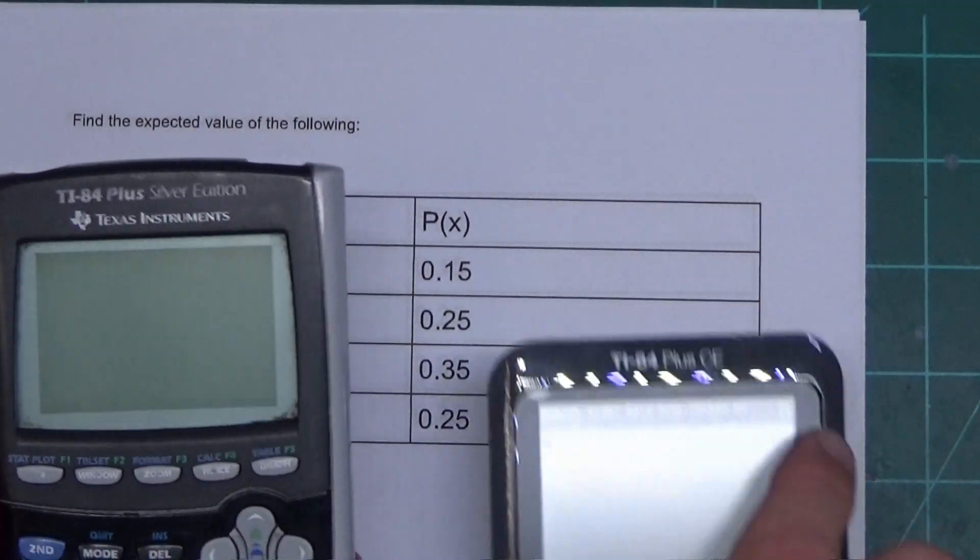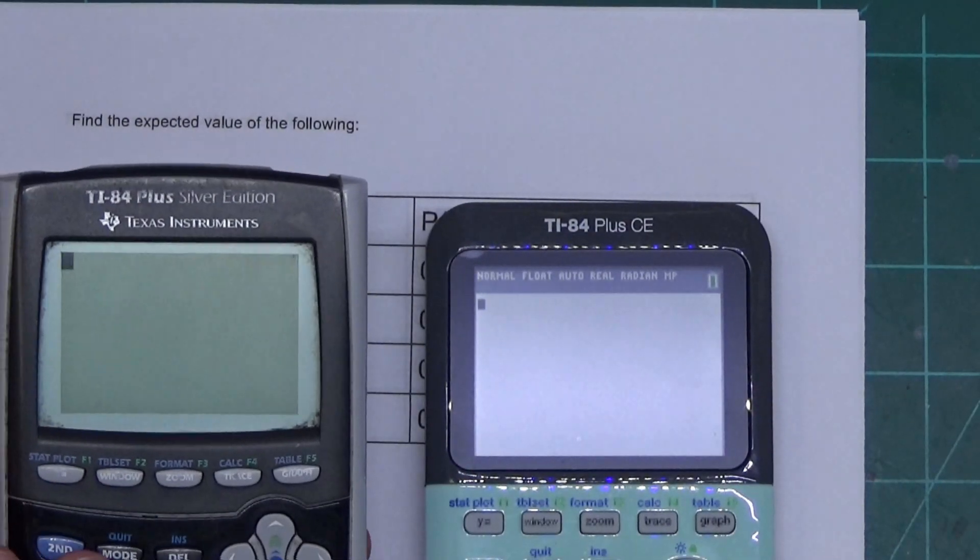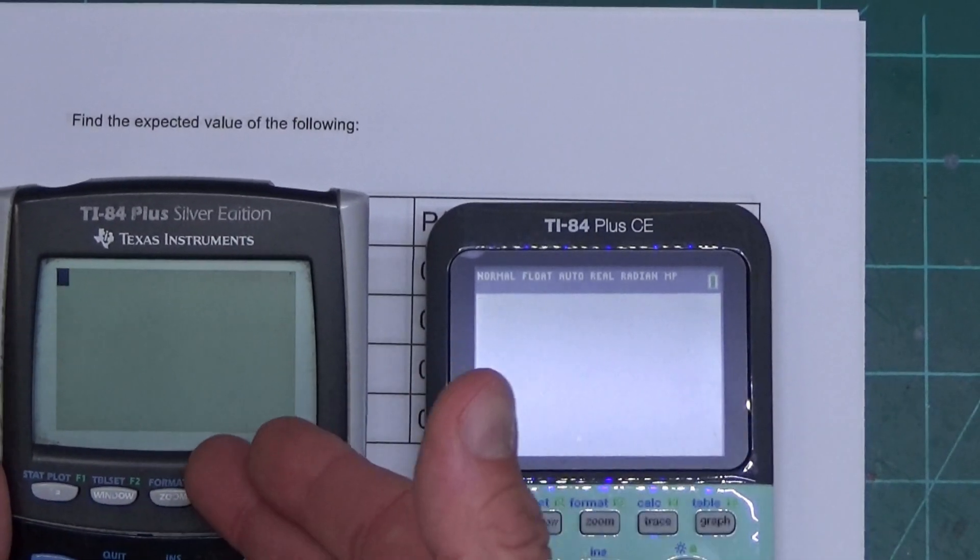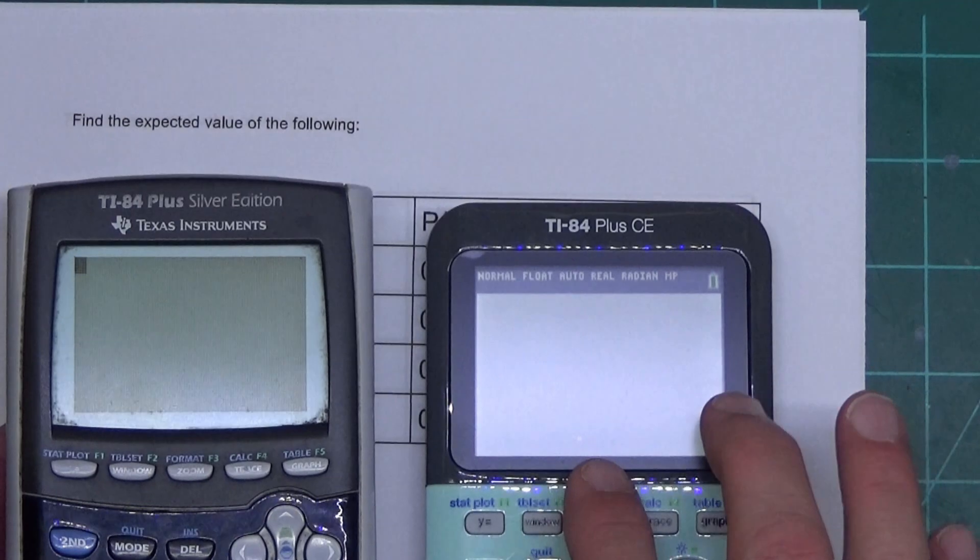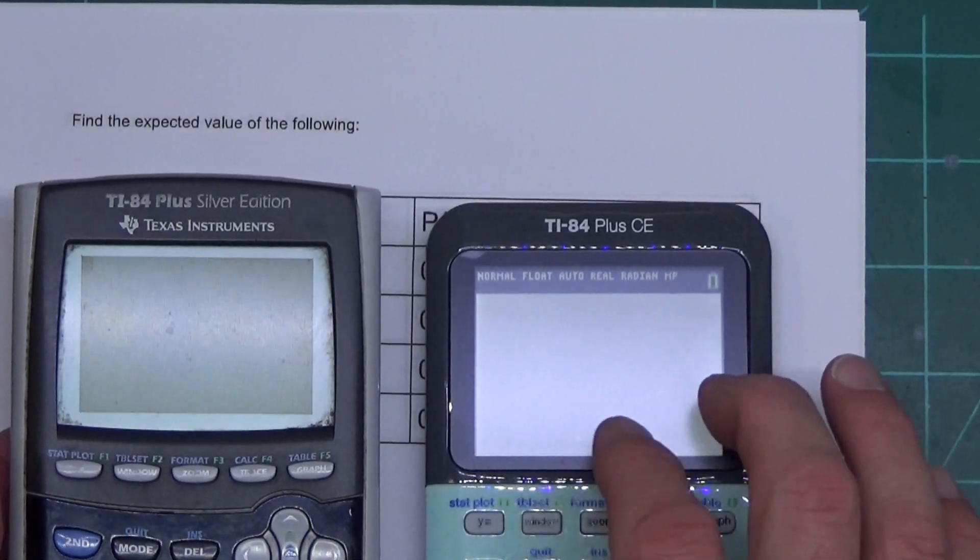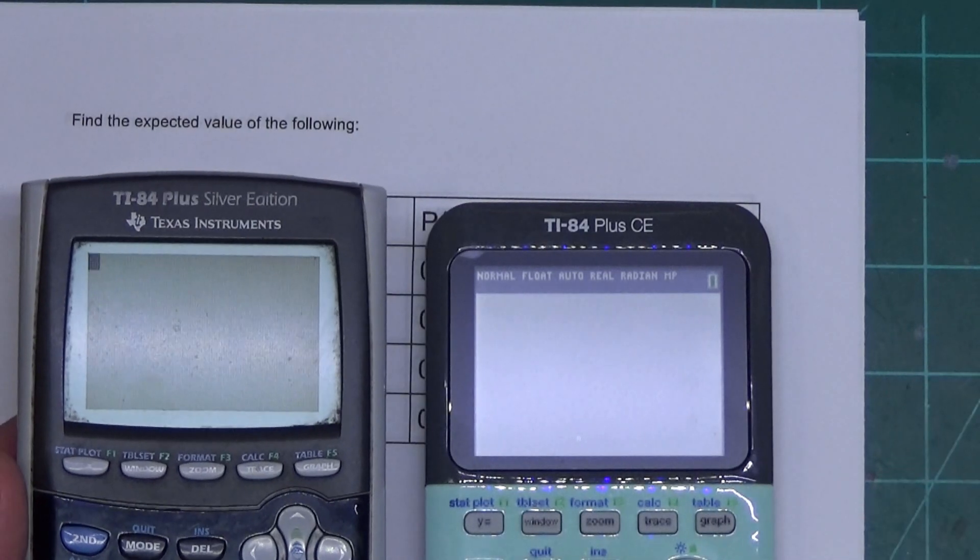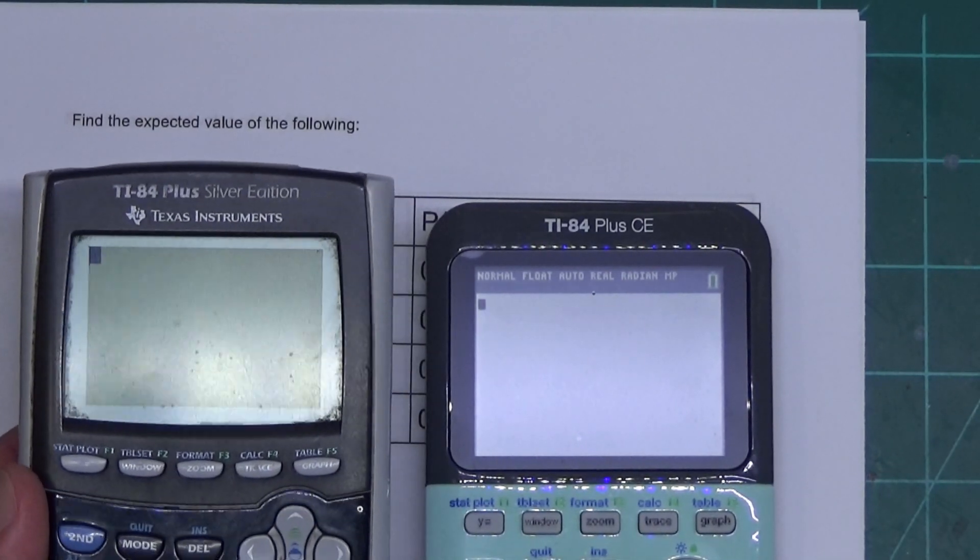Both calculators are going to look the same. This is an older 84, and it operates just like the TI-83s do. Everything looks the same between 83 and this. This is a newer 84. All the newer 84s will look like this one. I'm going to go through them both at the same time because there's very little difference between the two.